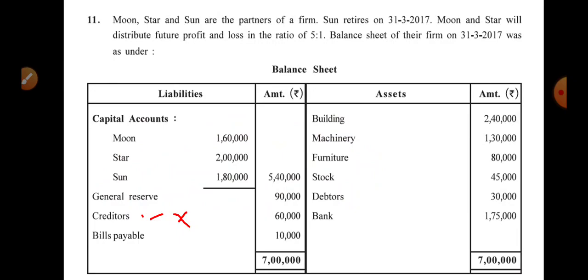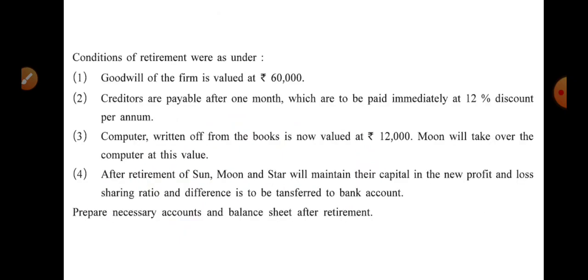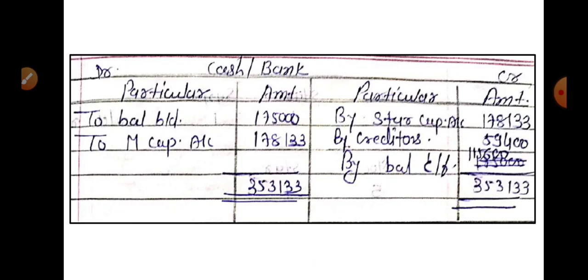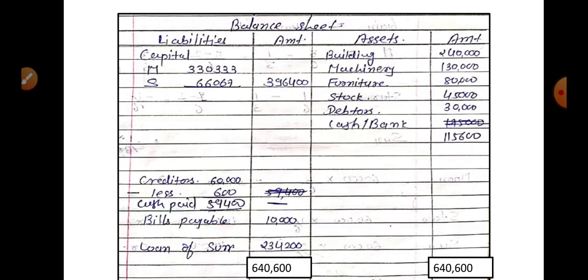Pause the video and prepare the accounts, or we will do the entries one by one together. We have: Revaluation Account, Partners' Capital Account, Cash/Bank Account, and Balance Sheet. All things are ready — take your calculator also.